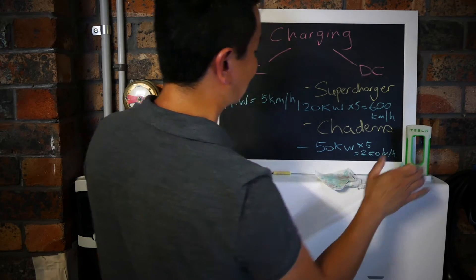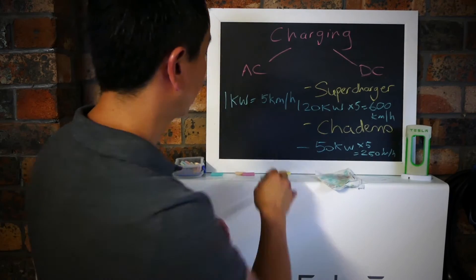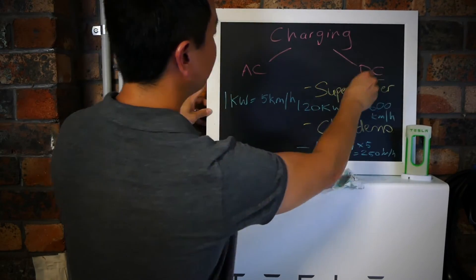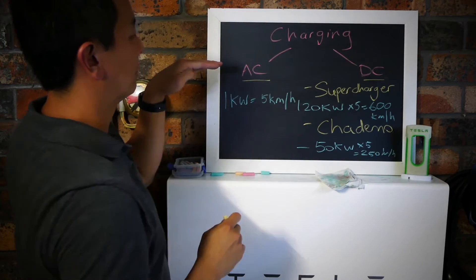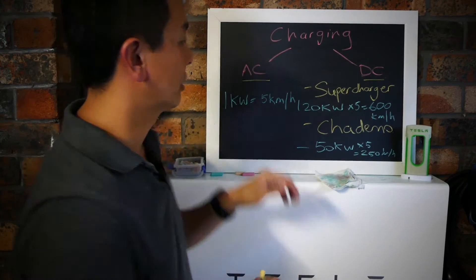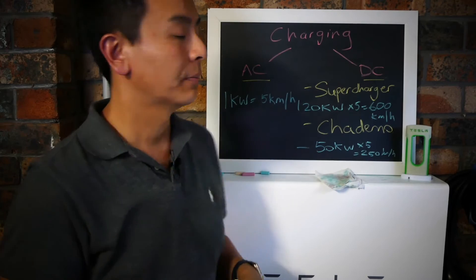You can't get DC chargers at home. Generally speaking, if you charge at home or at a destination charger, you'll need an AC charger because we run on AC in residential places.